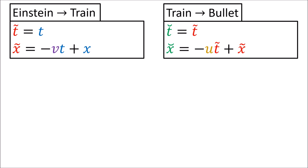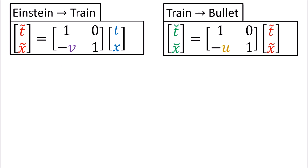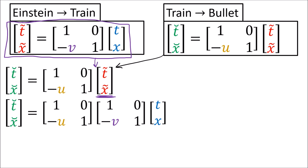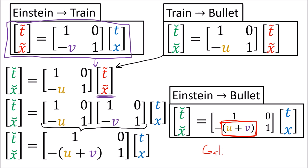Another way to get this result is to write out the two Galilean transformations in matrix form, writing the spacetime components in columns and converting between them with Galilean transformation matrices. We start with the matrix equation converting the tilde coordinates into the smile coordinates, substitute in the matrix equation for t-tilde and x-tilde, and multiply the Galilean matrix with speed u and the Galilean matrix with speed v to get the new Galilean matrix with speed u plus v.